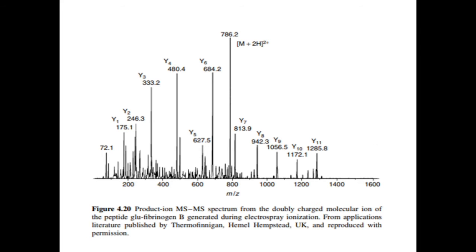For singly charged ions, the resolution of the mass spectrometer is usually sufficient to allow this. For multiply charged ions, as discussed previously, the resolution required to allow the selection of a single ion is often greater than that available from the mass spectrometer being used. What is observed in these circumstances is the MS-MS spectrum of the isotopic cluster, and this needs to be taken into account when interpretation of the resulting spectra is attempted.